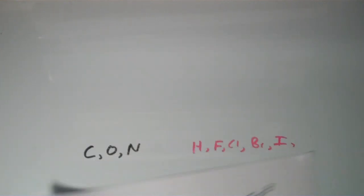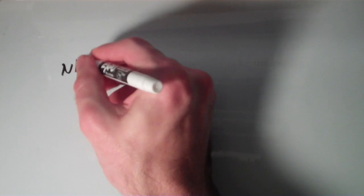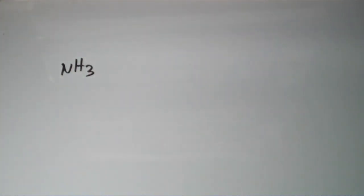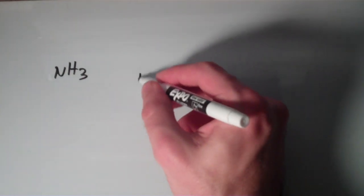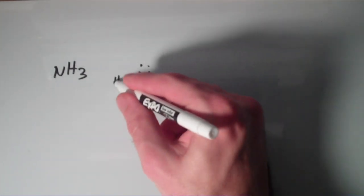Case in point, ammonia. Start talking about ammonia, NH3. And remember, if you draw the Lewis structure for ammonia, you find that there's a lone pair on that central nitrogen atom.